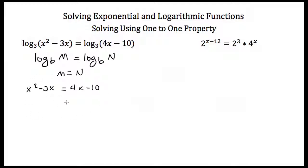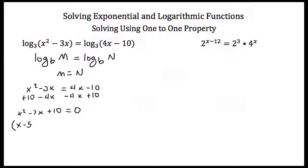Now this is just a quadratic equation, I can solve that. I just subtract 4x from both sides and add 10 to both sides and I'll get x squared minus 7x plus 10 is equal to 0. I can factor this quadratic: this is x minus 5 times x minus 2, equal to 0. That means that x is equal to 5 or x is equal to 2.